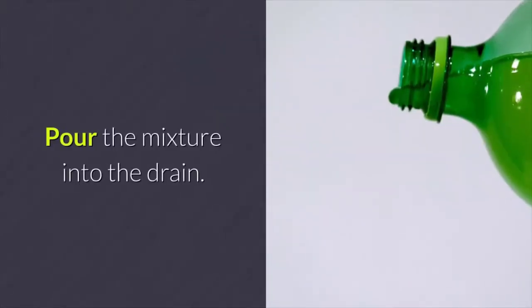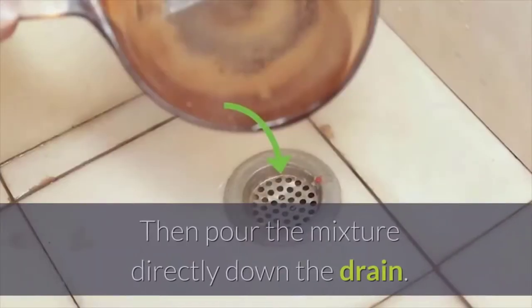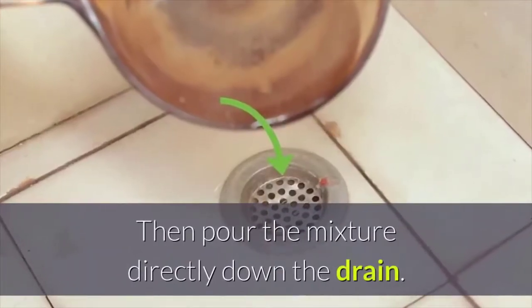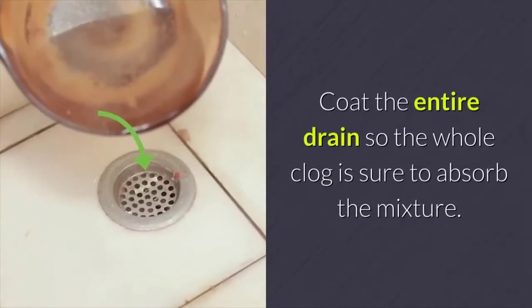Pour the mixture into the drain. First, remove the drain stopper. Then pour the mixture directly down the drain. Coat the entire drain so the whole clog is sure to absorb the mixture.